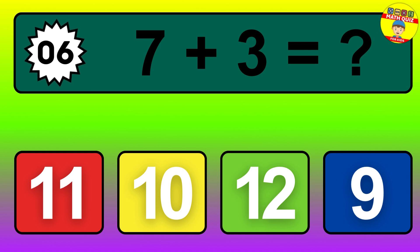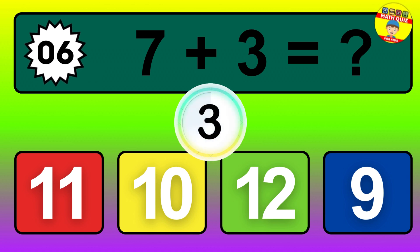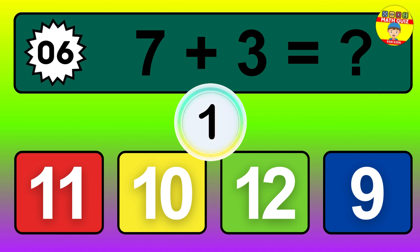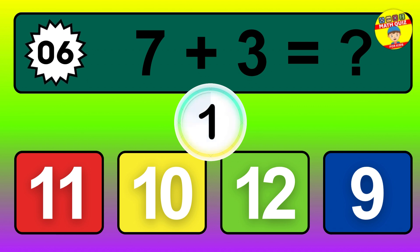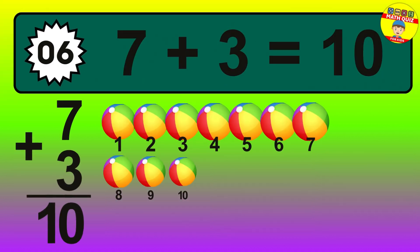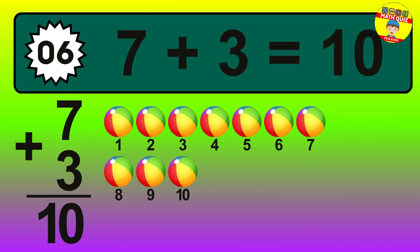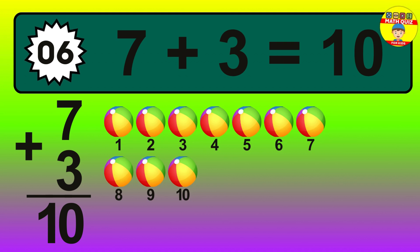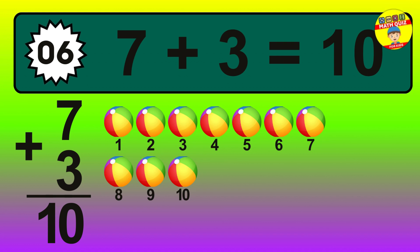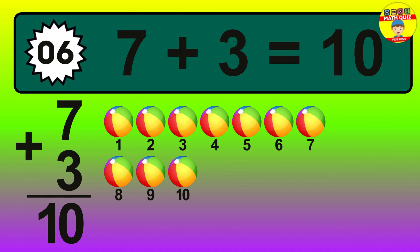Question 6. 7 plus 3 equals what? So the answer is 7 plus 3 is 10. Let's count it. 1, 2, 3, 4, 5, 6, 7, 8, 9, 10.